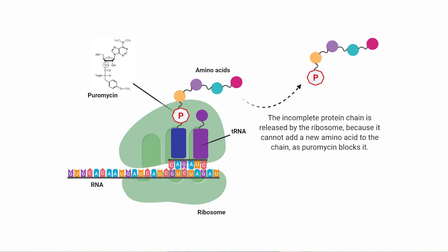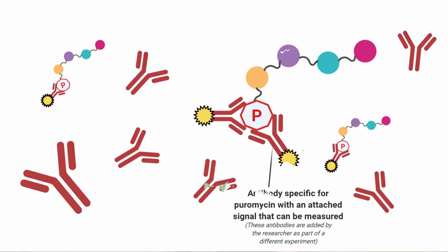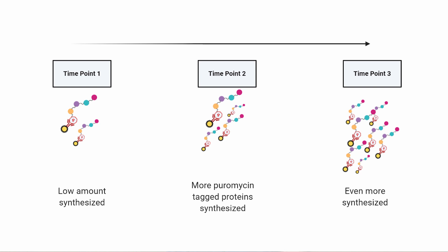As a result of this tag, we can measure total puromycin-tagged protein by using antibodies that are specific for puromycin. If we have two time points at which we take our measurements, we can know the amount of puromycin-tagged protein at the first time point and at the second time point, then compare the difference and relate it to the time of measurement to get a rate of protein synthesis.